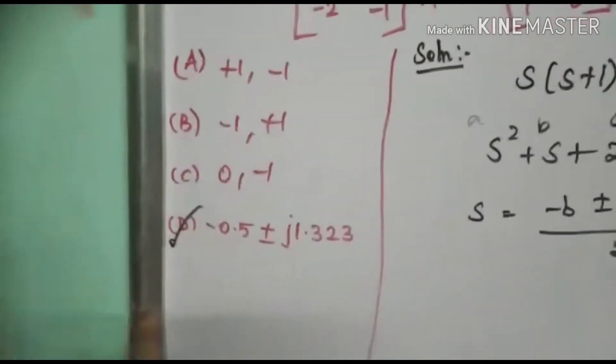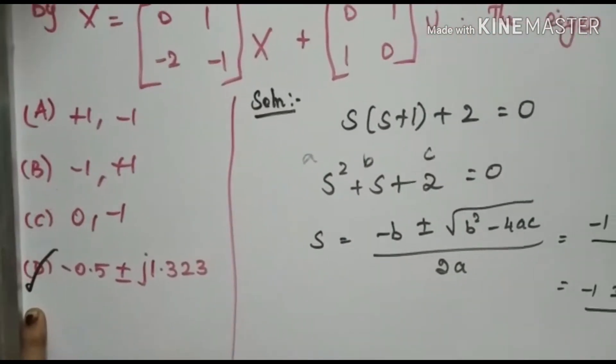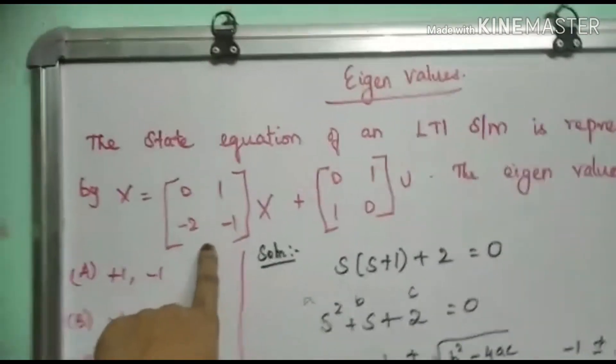Root of minus gives us the imaginary part, that is j. So from the options, option D is our correct answer. That is, minus 0.5 plus or minus j1.323 are our eigenvalues for this given matrix.